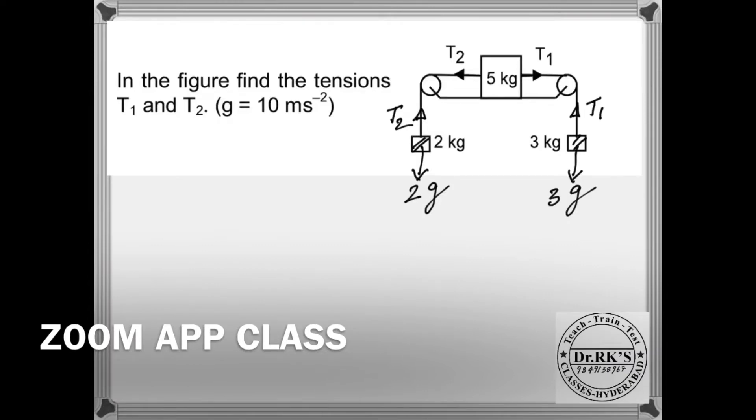So let a is the acceleration of the system. The resultant force acting on 3 kg is 3g minus T1 is equal to 3 into a. And for 5 kg, T1 minus T2 is equal to 5 into a. And on 2 kg, T2 minus 2g is equal to 2 into a.